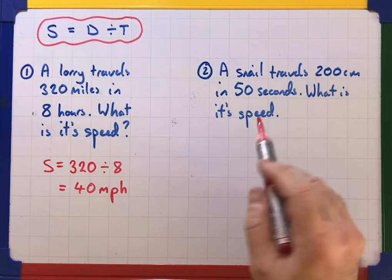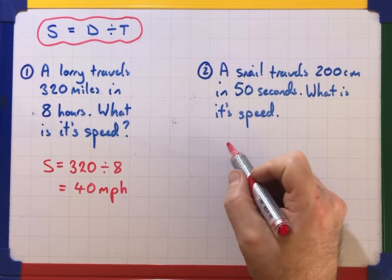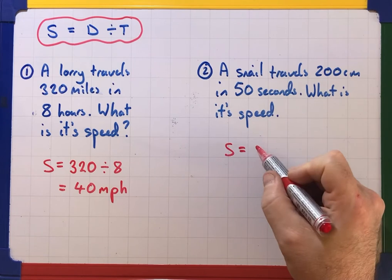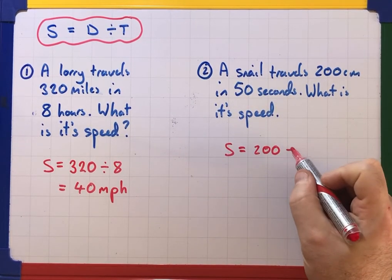Well it's same thing. Speed is distance divided by time. So the speed is the distance. Well the centimeters is the distance divided by the time. That's the 50.